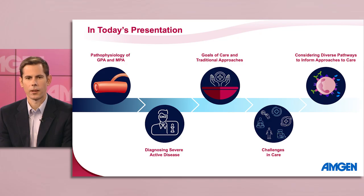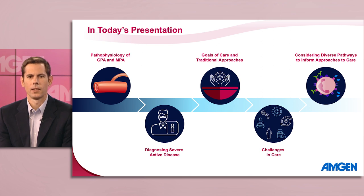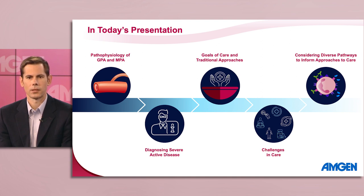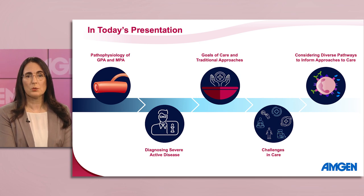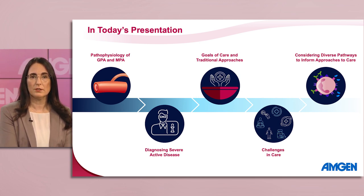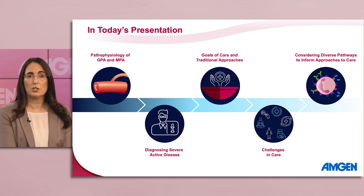In today's presentation, we want to highlight that GPA and MPA are chronic and progressive autoimmune diseases that cause small to medium vessel vasculitis, damaging the vasculature throughout the body. Patients often present with severe active disease characterized by heterogeneous signs and symptoms affecting multiple organ systems. Common approaches to achieving the goal of sustained remission tend to target the humoral response or use a broad-based approach to dampening general immune responses.